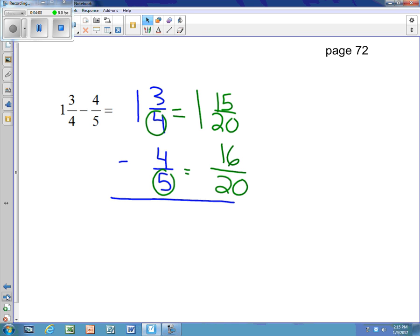We cannot subtract 15 minus 16, so we have to borrow from the 1 and make it a 0. And since the denominator is 20, we have to add 20/20 to 15/20, and we end up with 35/20. 35 minus 16 is 19/20.